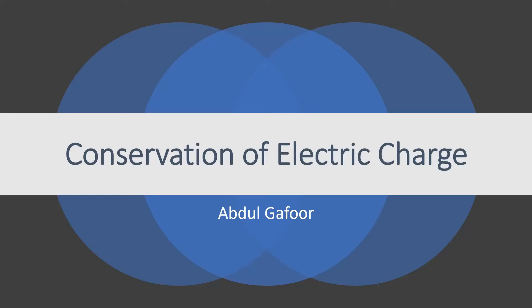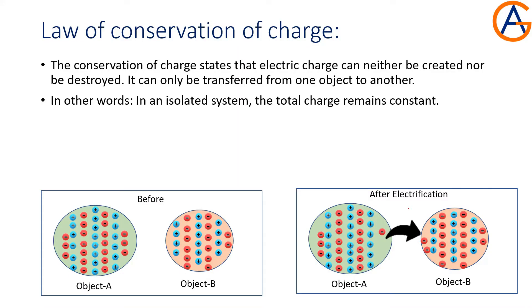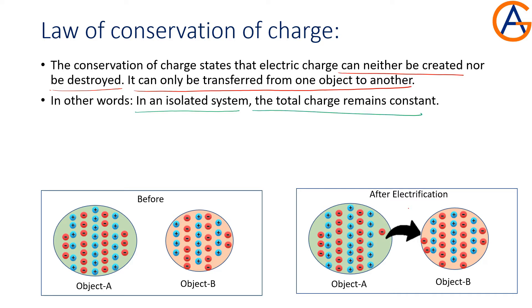Welcome to my physics video classes. Today's topic is conservation of charge. According to the law of conservation of charge, the charge can neither be created nor be destroyed. It can only be transferred from one object to another object. In other words, in an isolated system, the total charge remains constant.